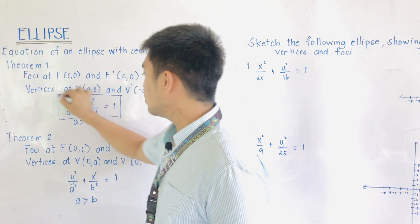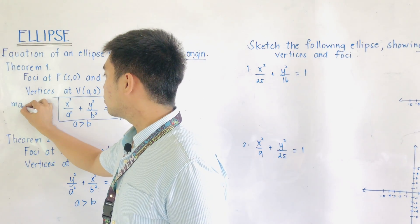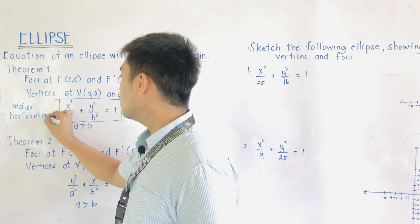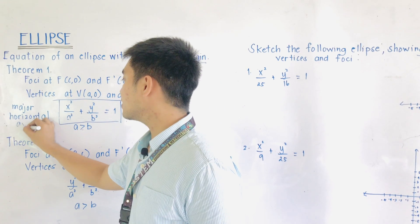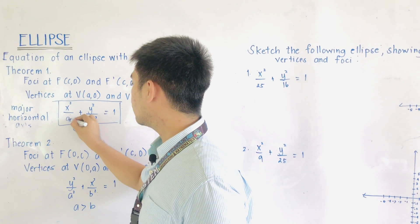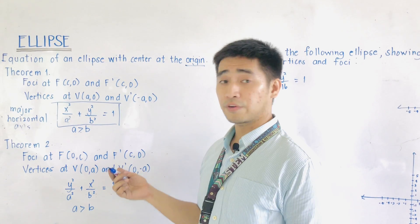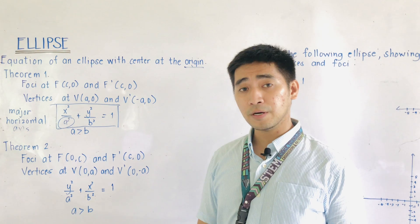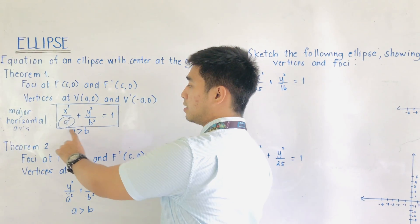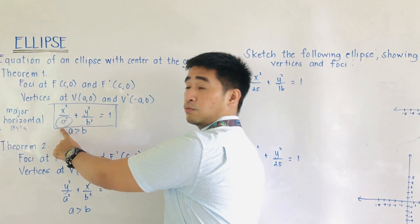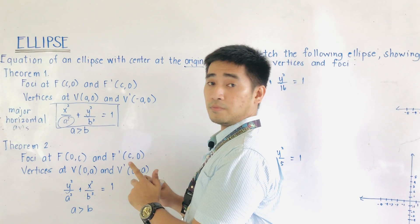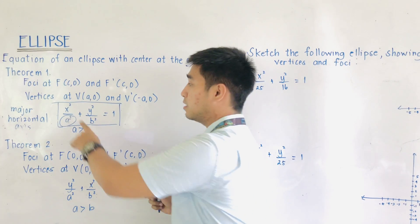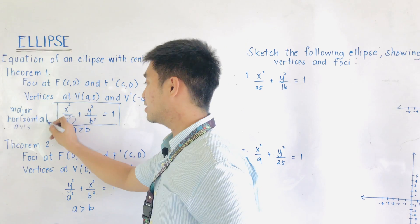Since this is Theorem 1, this is major horizontal. When we say major horizontal axis, our equation is x² over A² plus y² over B² equals 1, and A² is greater than B². Always remember: if A is greater than B and the larger denominator is below x squared, therefore it is major horizontal.